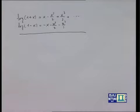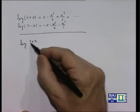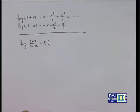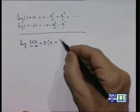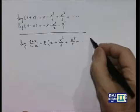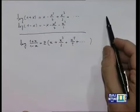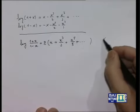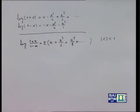Facendo la differenza membro a membro, le potenze pari si cancellano e le dispari si sommano, quindi log(1+x) - log(1-x) = log((1+x)/(1-x)) = 2(x + x³/3 + x⁵/5 + ···). Questo è certamente vero per |x| < 1.